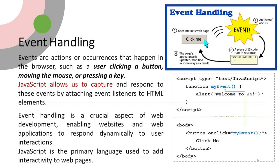In the example code, there is a script tag containing a method called 'myEvent' which executes an alert saying 'Welcome to JavaScript.' In the body, there is a button calling that JavaScript method 'myEvent.' When you click the button, as shown in the picture, it executes the method and displays 'Welcome to JavaScript.' This is how the event works.